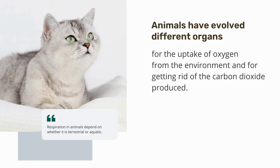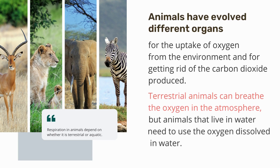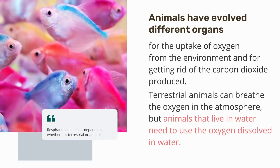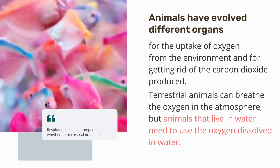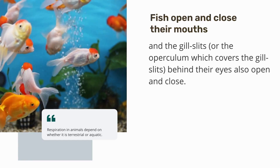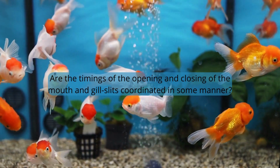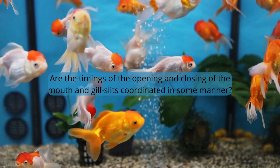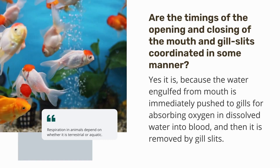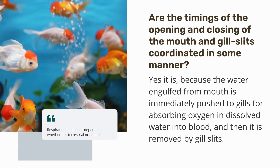Animals have evolved different organs for the uptake of oxygen from the environment and for getting rid of carbon dioxide produced. Terrestrial animals can breathe atmospheric oxygen, but aquatic animals need to use the oxygen dissolved in water. If we observe fish in an aquarium, we notice they open and close their mouths, and the gill slits behind their eyes also open and close. The opening and closing of the mouth and gill slits are coordinated — water taken in from the mouth is immediately pushed to the gills for absorbing dissolved oxygen into blood, and then removed by the gill slits.